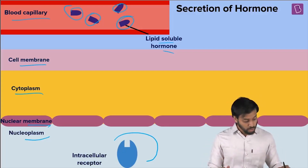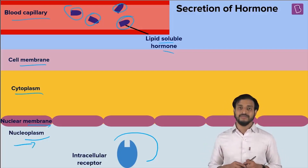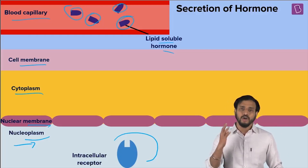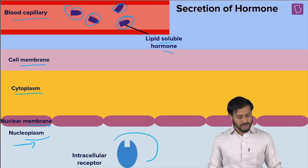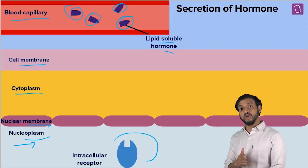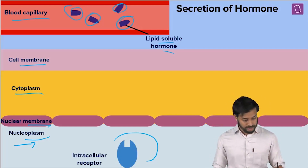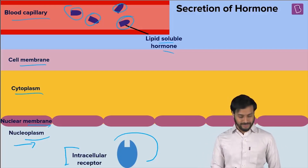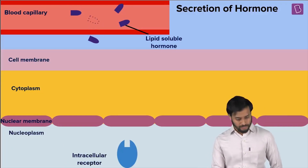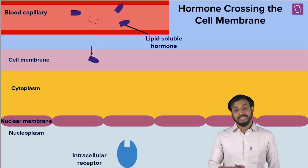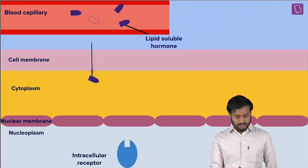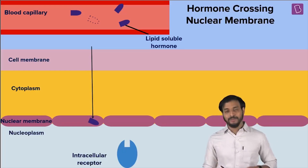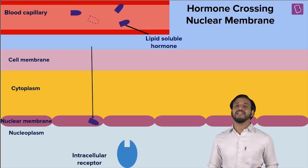You have the intracellular receptors — inside the nucleus. Now, these lipid soluble hormone molecules can cross the cellular membrane lipid bilayer. The question is: will they be able to cross the nuclear membrane as well, where the intracellular receptors are present? Yes — the nuclear membrane is also made up of the lipid bilayer, so the hormone can definitely cross it.